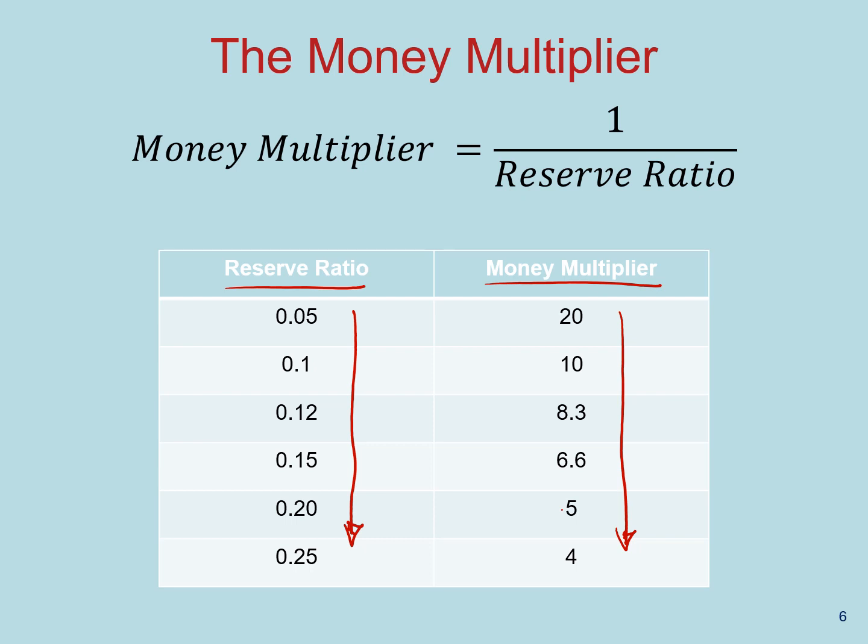Let's think of a scenario: if banks increase their reserve holdings because of uncertainty or a financial crisis, they're not going to be lending to the public. That means the multiplier is becoming smaller, and if the multiplier is becoming smaller, then the amount of money available in the economy is shrinking. And this is what happens during crises.